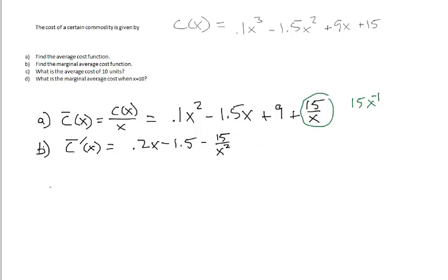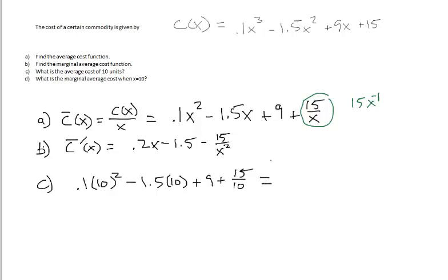Part c asks for the average cost of 10 units. We take our average cost function and plug in 10: c̄(10) = 0.1(10²) - 1.5(10) + 9 + 15/10, which equals $5.50. So if we produce 10 of this commodity, the average cost of each unit would be $5.50.